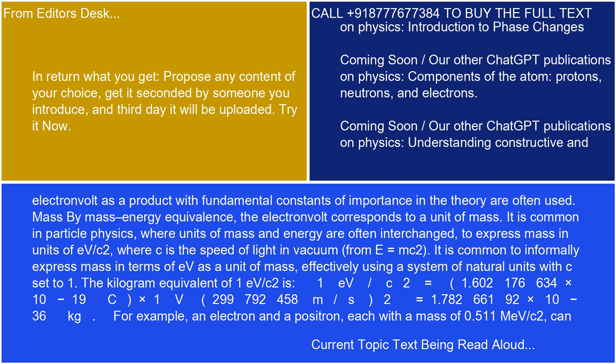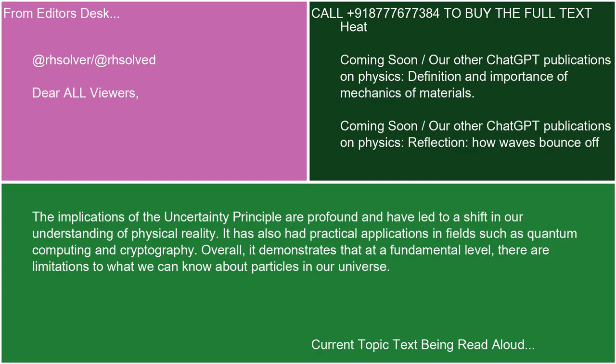Mathematically, the Uncertainty Principle can be expressed as Δx · Δp ≥ h/2, where Δx represents the uncertainty in position, Δp represents the uncertainty in momentum, and h is Planck's constant divided by 2π.